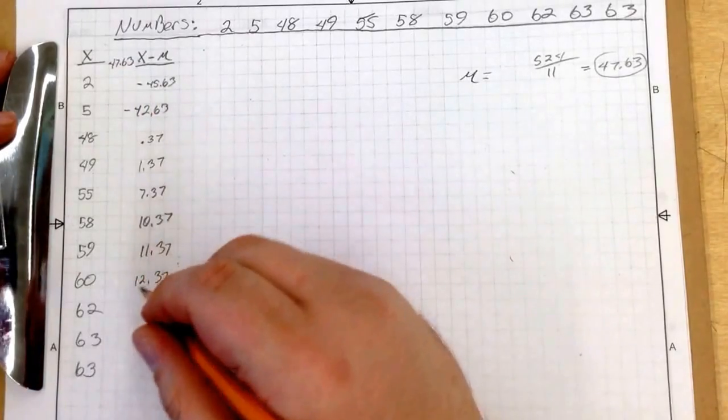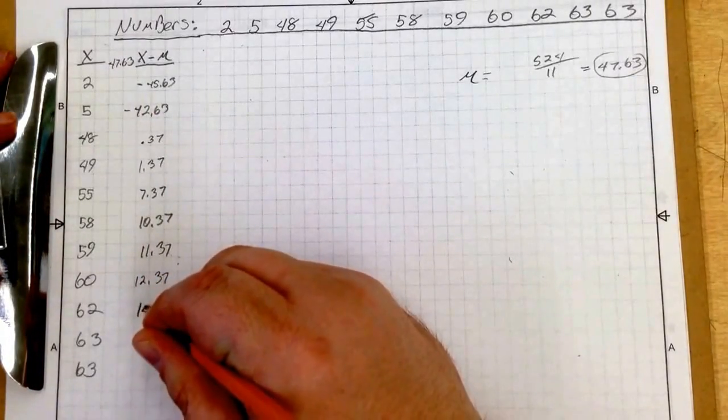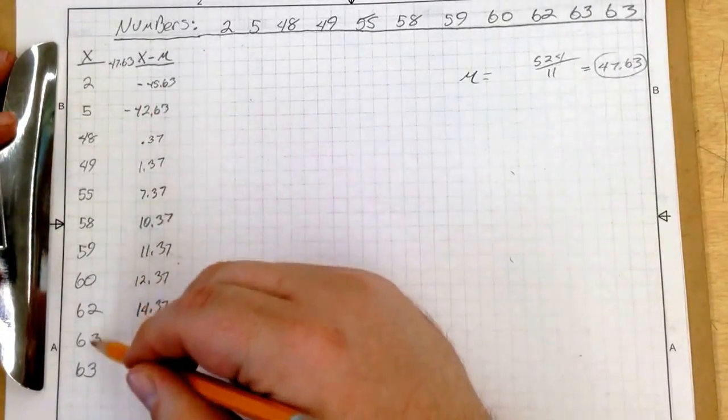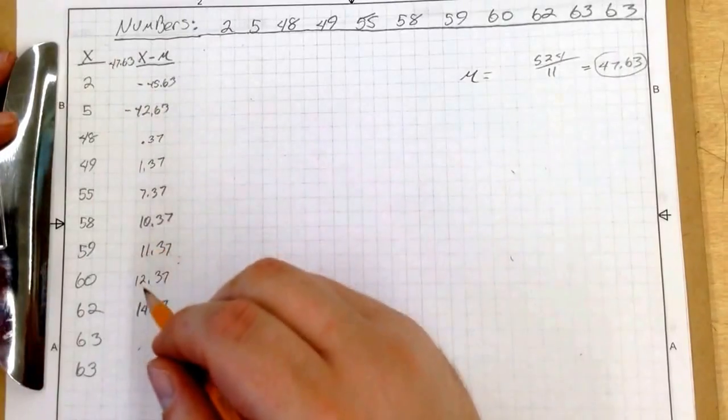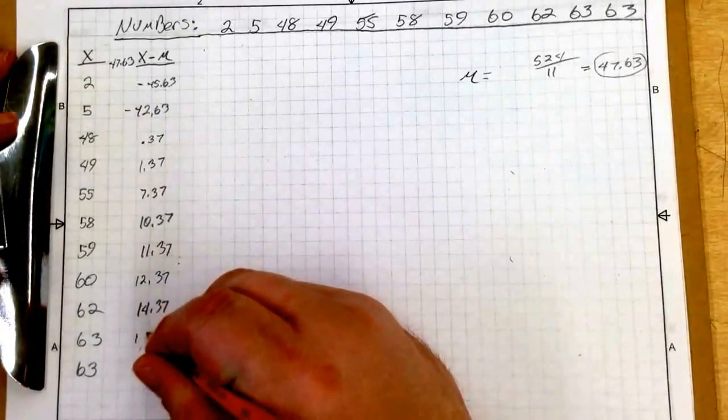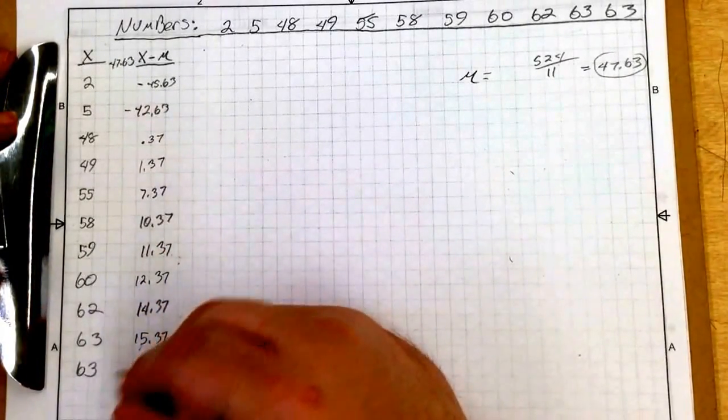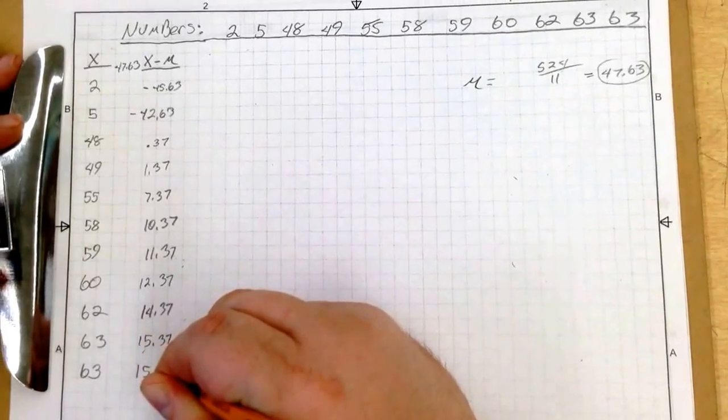60 minus 47.63 is 12.37. 62 minus 47.63 is 14.37. 63 minus 47.63 is 15.37. And then that is the same number, 15.37.